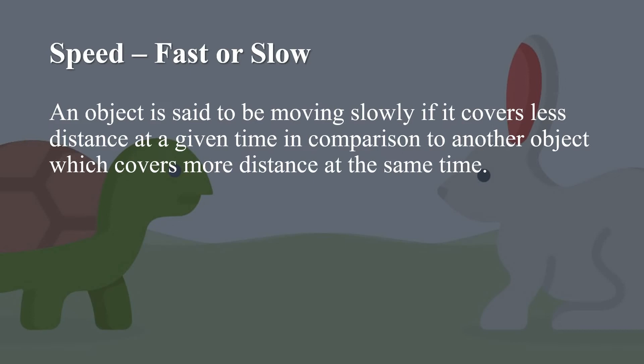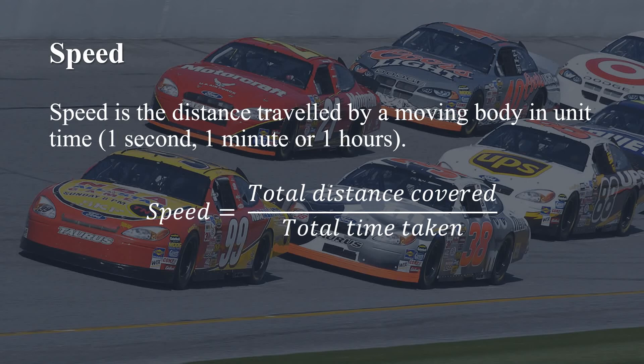Now let us understand the term speed. Speed is the distance travelled by a moving body in unit time — 1 second, 1 minute, or 1 hour. In other words, we can write a formula for speed: speed equals total distance covered upon total time taken.